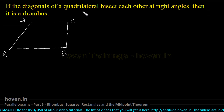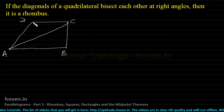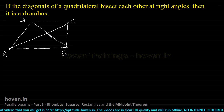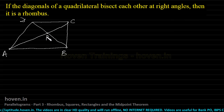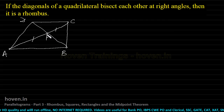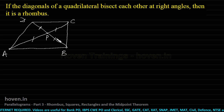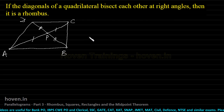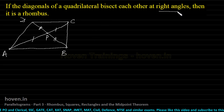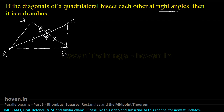We have been given that the diagonals of the quadrilateral bisect each other. If AC is one diagonal and BD is the second diagonal, they meet at point P. Bisection of AC means AP = PC, and bisection of BD means DP = PB. We have also been given that the diagonals bisect each other at right angles — so angle DPA = angle DPC = 90°.